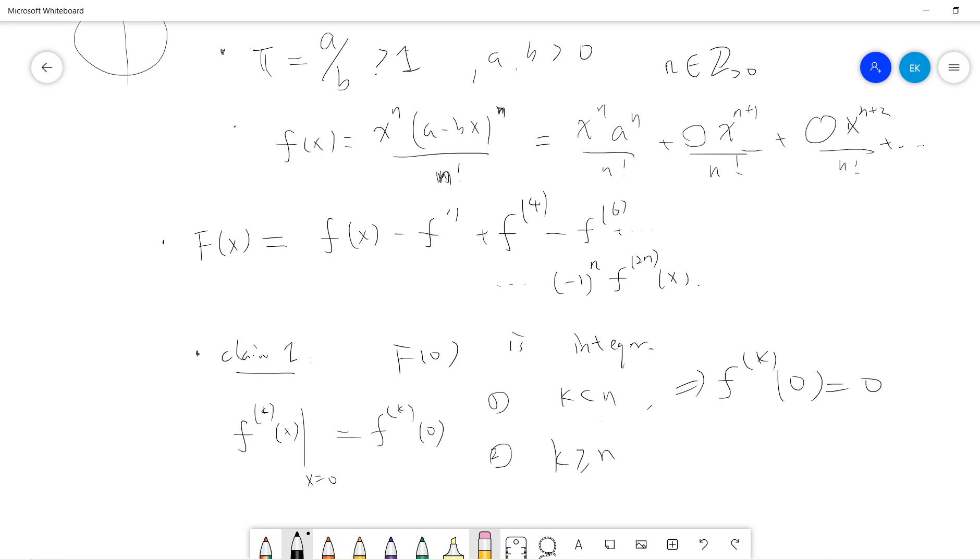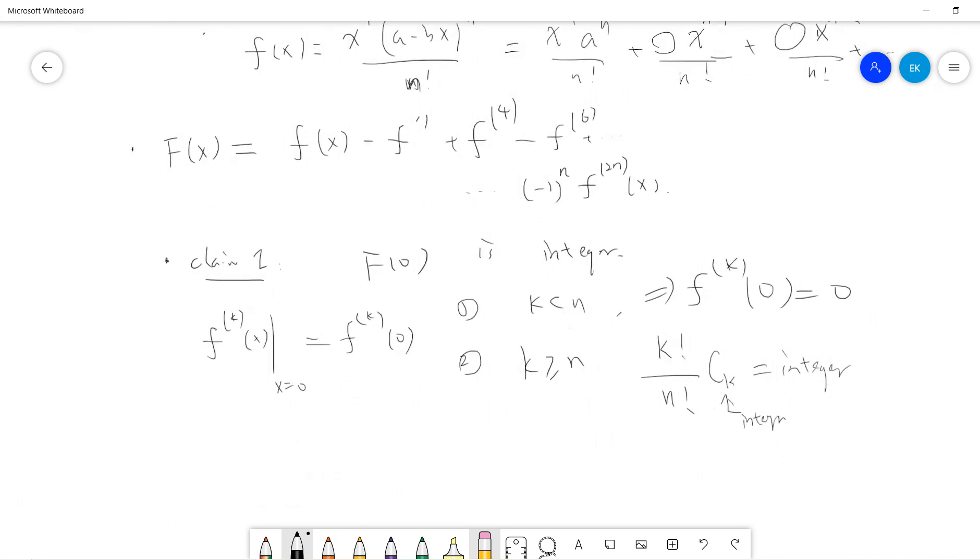If k is greater or equal to n, then you see every term will at least produce n factorial. We will get some k factorial over n factorial multiplied by some integer. So the total is an integer. Every term is integer, so f(0) is integer.